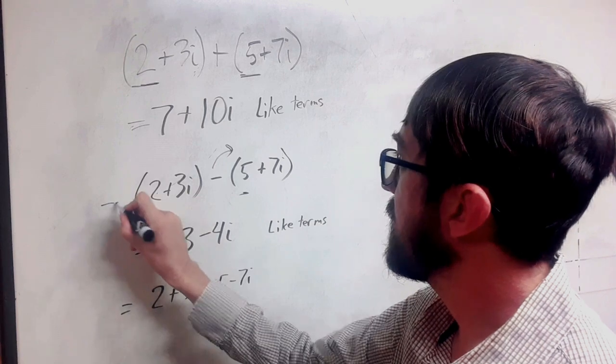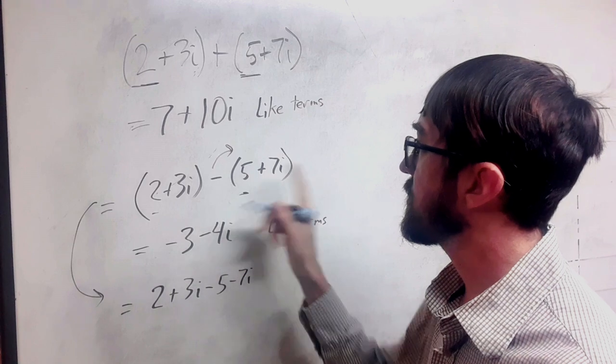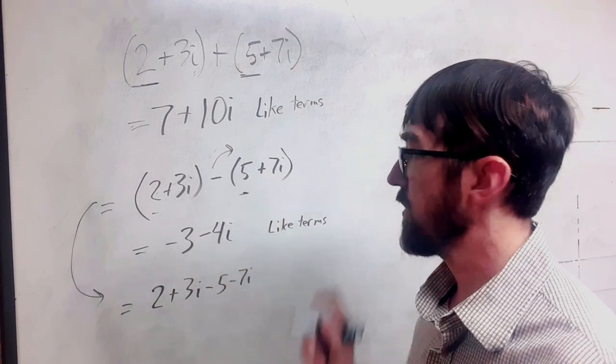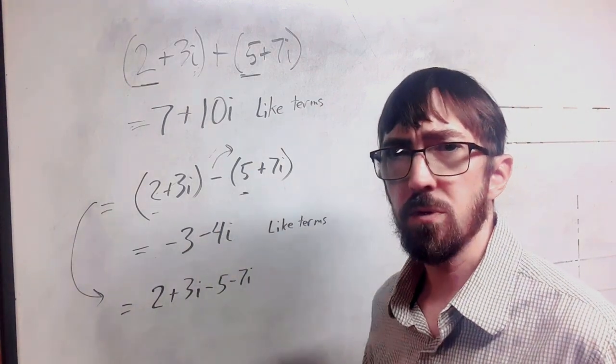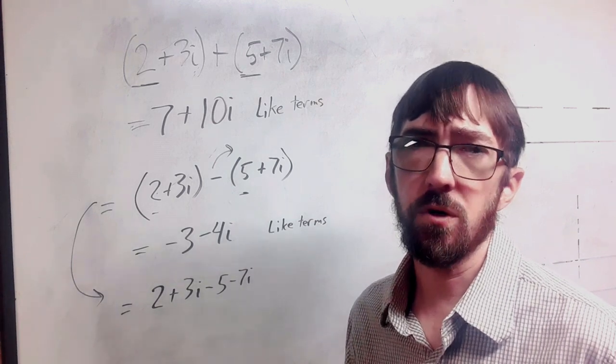So this and this are the same thing. We kind of have this distributive idea of the negative across there. So that's what makes the subtraction just slightly more difficult.